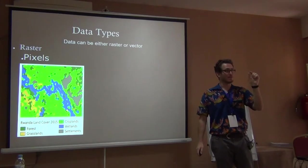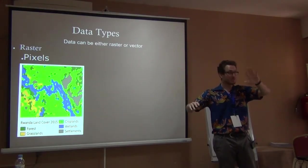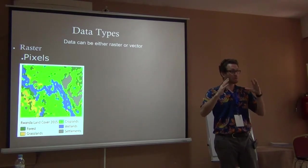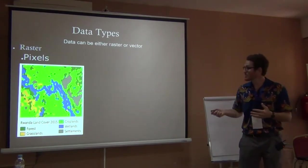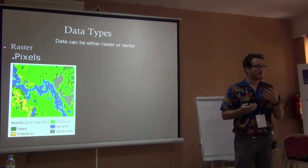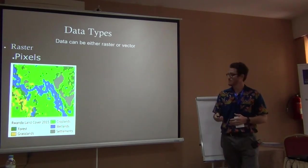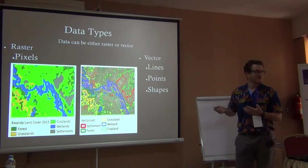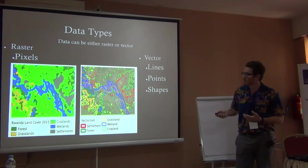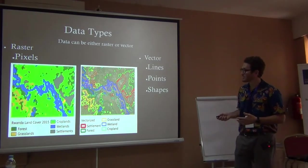A raster doesn't have to represent visible light — it can represent many different things. In vector format, the same plot of land is represented as a system of lines: we've taken a river, which was a bunch of little blue cells in a raster, and outlined it with a line. The same information exists in two different formats: one is a raster, one is a vector.